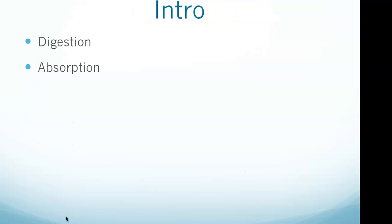Let's kick it off with a little intro to digestion and absorption. The GI system converts food into nutrients that the body can use. This is done through digestion and absorption. Digestion is the chemical and mechanical breakdown of foods into smaller compounds that can be utilized by the body. After digestion is complete, the nutrients are absorbed, or moved into the bloodstream from the intestines.